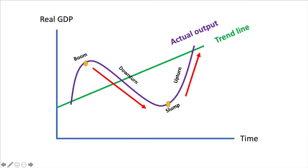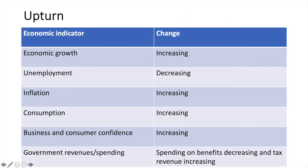Let's look at each stage in turn, starting with an economic upturn. In an economic upturn, the economy is just recovering from a slump — sometimes referred to as a recovery. Economic growth is increasing; more is being produced than before, so unemployment is falling. Pressure on prices is rising as consumers start spending more than before, which boosts business and consumer confidence. As more people are back to work, income taxes collected will rise on both individuals and corporations. With fewer people to support, government benefit spending should start to fall as well.